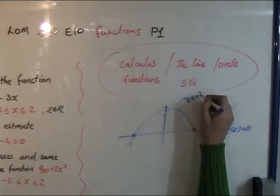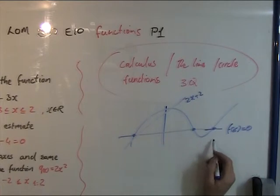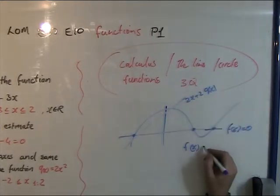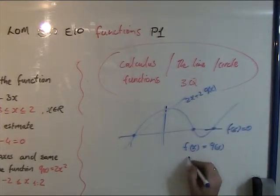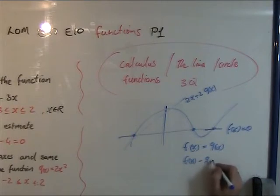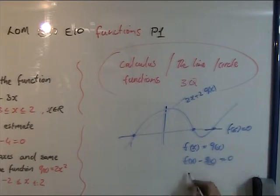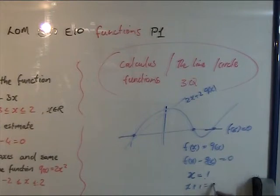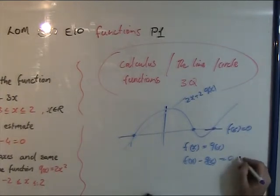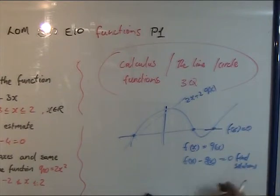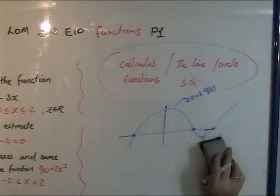And this line, two x plus two, we can now solve that as well — making the equation equal to g of x, and then subtracting, treating it like a normal equation, because it's minus, equal to zero. That's the same as saying x is equal to one — x plus one is equal to zero. So you can find solutions for this — find solutions, where they cross each other. And you can do that also with other curves.